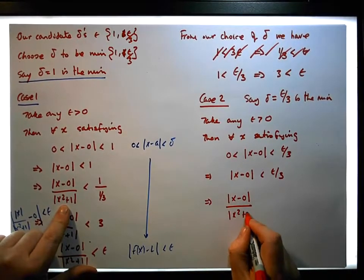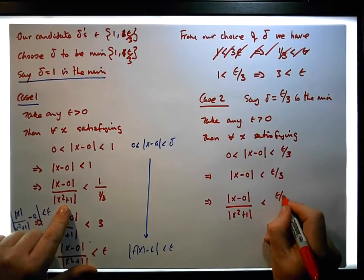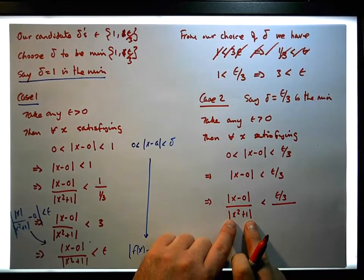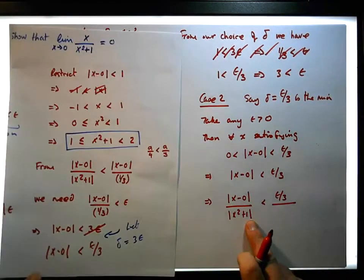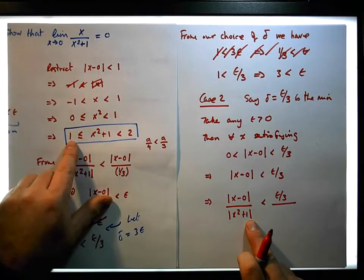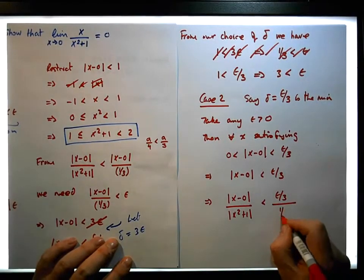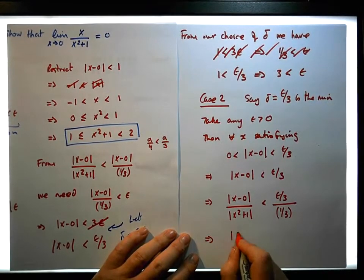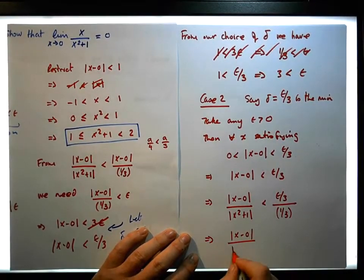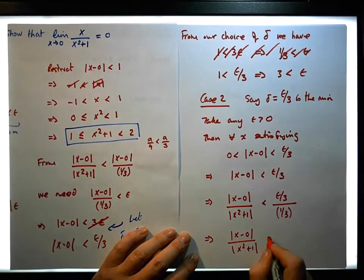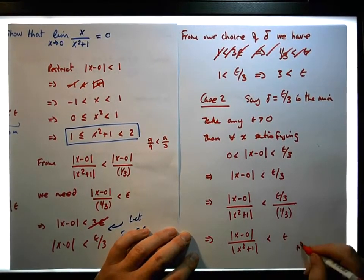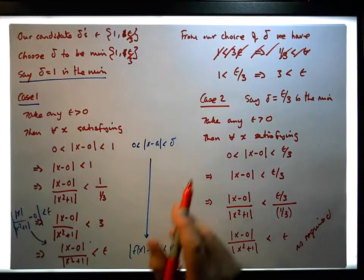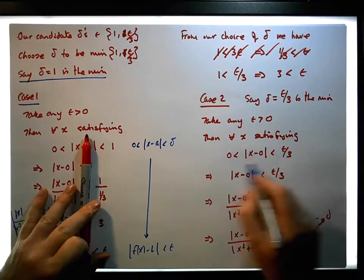This implies that |x minus zero| over x squared plus one is less than epsilon over three divided by a number smaller than x squared plus one. We know a number smaller than x squared plus one — it's one third. So this implies that x minus zero over x squared plus one is less than epsilon, as required.